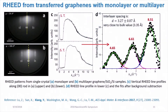To be more quantitative, from the spacing between the peaks in the lower plot of figure C, we can actually calculate the interlayer spacing of our multilayer graphene sample, which is about 3.27 Ångström, very close to the bulk value of graphite, which is 3.35 Ångström.